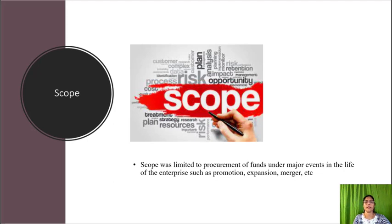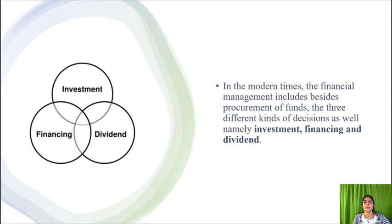The scope of financial management has undergone changes over the years. The scope was limited to procurement of funds — that is, getting funds under major events in the life of the enterprise such as promotion, expansion, merger, etc. The study of financial management considers determination of size of the enterprise and rate of growth, determination of composition of assets, determination of mix of financing — debt and equity — and analysis, planning and control of financial affairs of the enterprise.